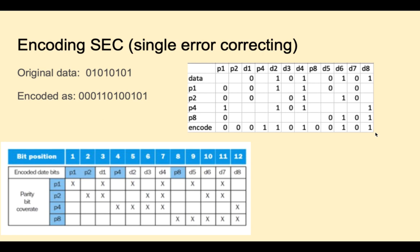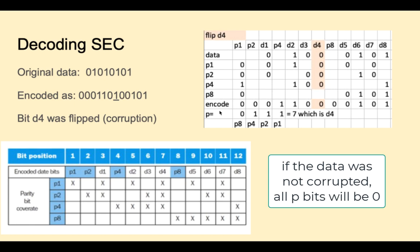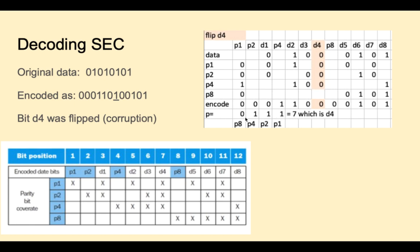These 12 bits would be written to memory or sent over the internet. Now let's see what happens when we later read that data or receive it at the other end. Let's say there was a corruption in bit D4 — D4 should have been a 1 but it's a 0. When the parity bits are checked, they show 0, 1, 1, 1 — that's 7 — which is the bit D4 location. That tells us bit 7 is the one that was corrupted, so it can be corrected by flipping that bit back to a 1 and now the data is fixed.